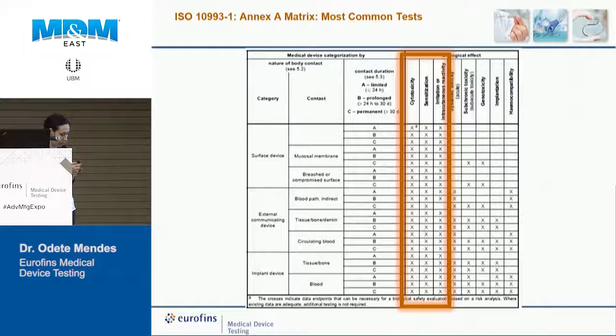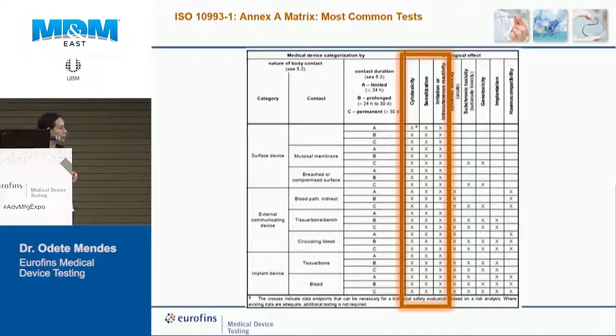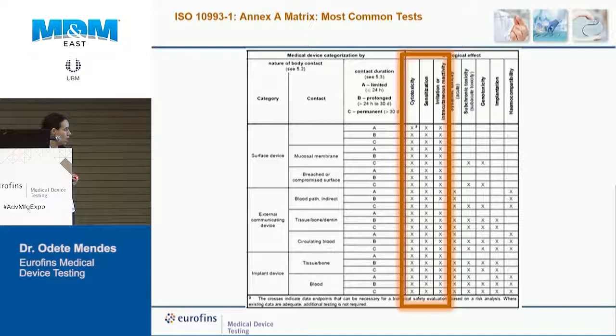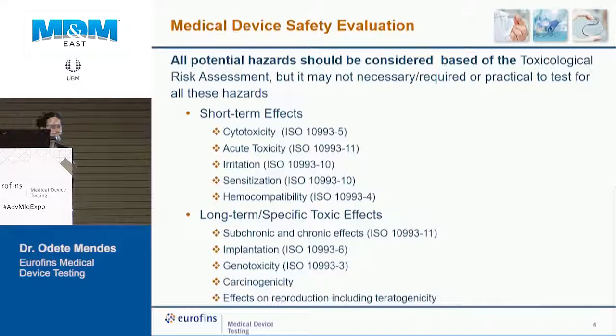This is what the matrix looks like. It depends largely on the category of your medical device — whether it's a surface device, an external communication device, or an implant device — and then the types and duration of contacts. Based on the type of device, you will have to do some tests or others. The most common ones, highlighted here, are cytotoxicity, sensitization, and irritation or intercutaneous reactivity, required for pretty much every single device. The others are needed on a case-by-case basis.